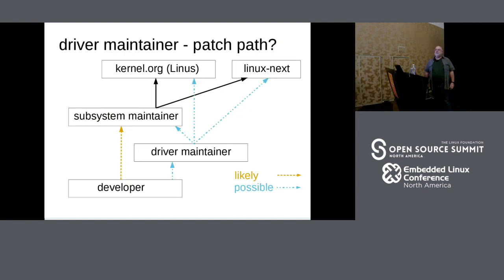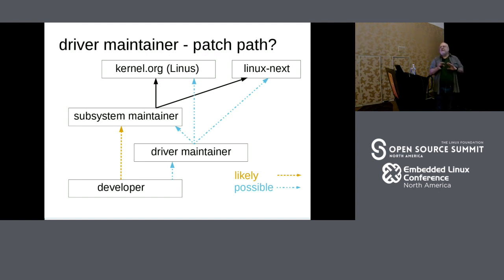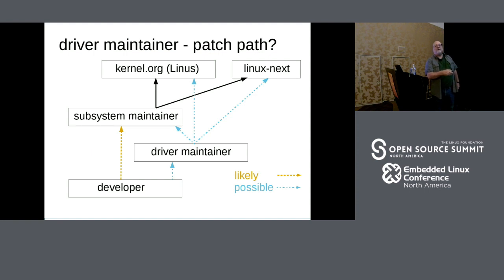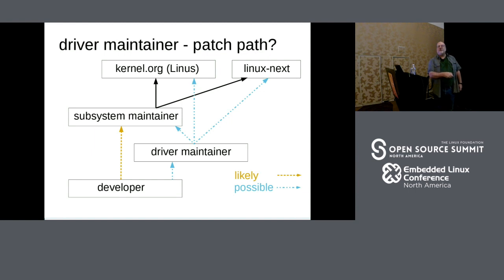There are a couple of plausible paths that patches and fixes can go through. The easiest way is when someone sends a fix directly to the typical subsystem maintainer, totally bypassing you — the driver maintainer — and the subsystem maintainer worries about getting the patch up to kernel.org and into the Linux Next tree for testing. Another possible path is that a fix would go directly to the driver maintainer, who would either interact with the subsystem maintainer or directly with Linus and Linux Next.